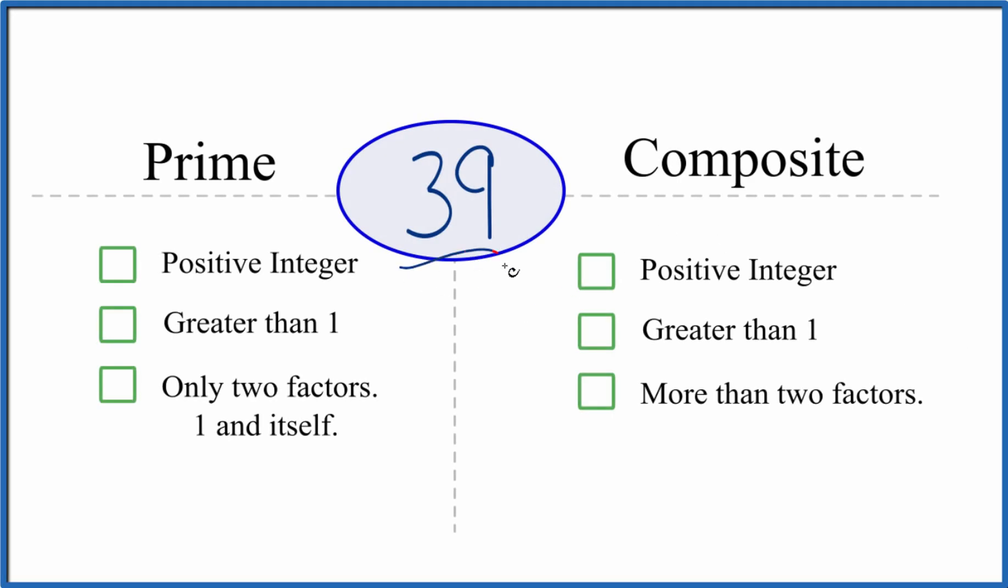If you're asked to determine whether 39 is prime or composite, here's how you do it. Let's start by looking at whether 39 is a prime number.